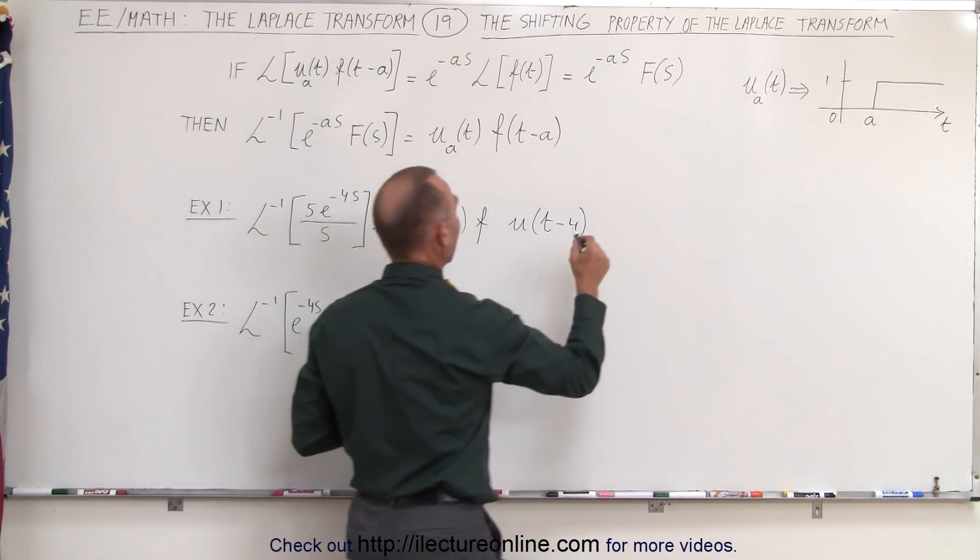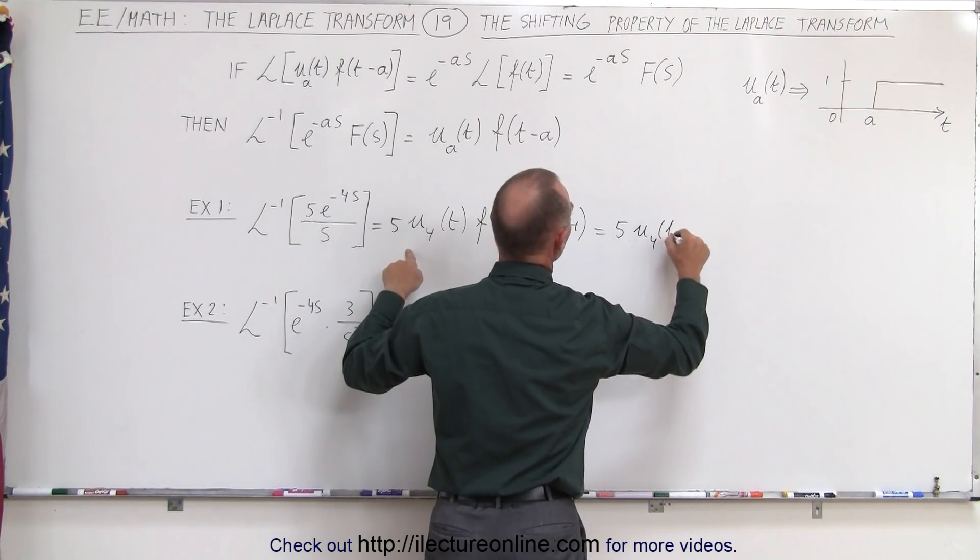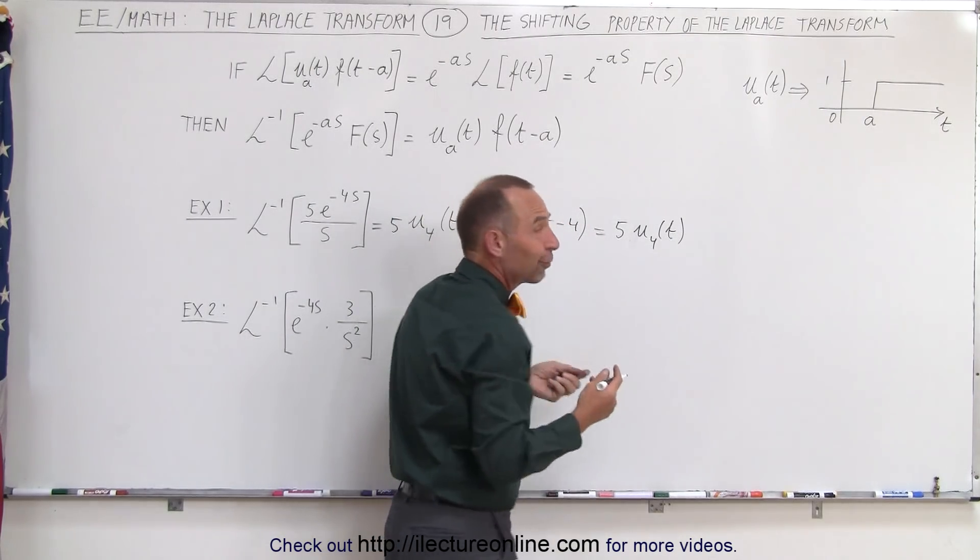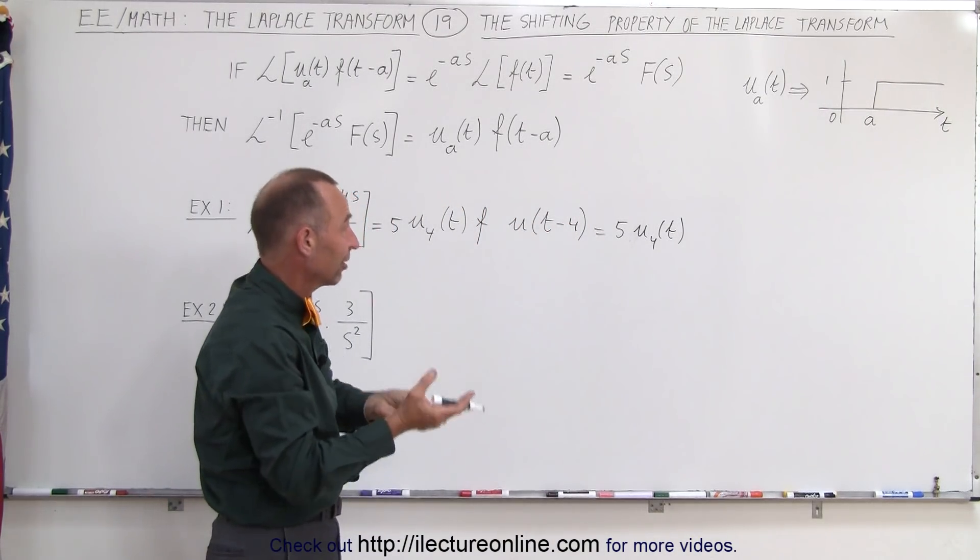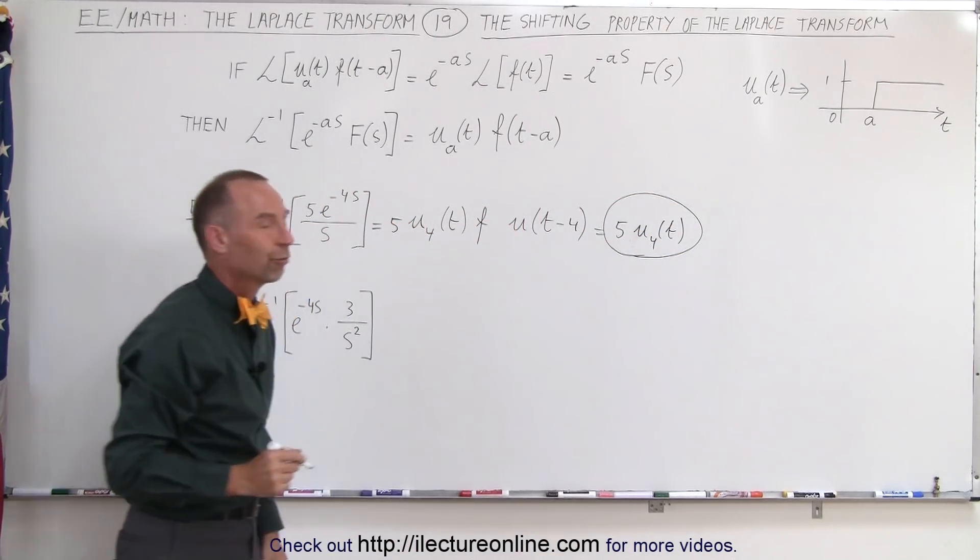So this can be written as 5u sub 4 of t times u sub 4 of t. Of course, the step function times the step function still gives you the step function, so this would then be the final answer of our inverse transform.